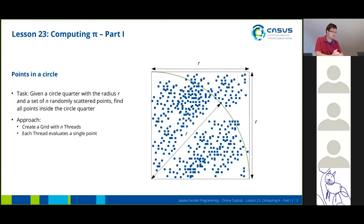Our approach is going to be that we create a grid with n threads so that we have one thread per element, and each thread will evaluate a single point and try to determine if this point is inside the circle or not.